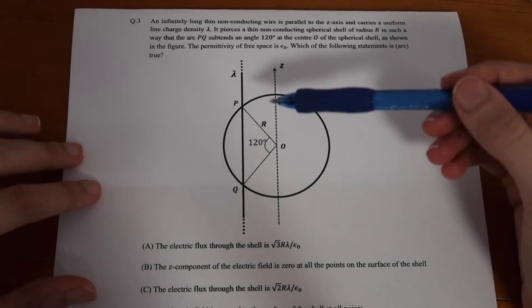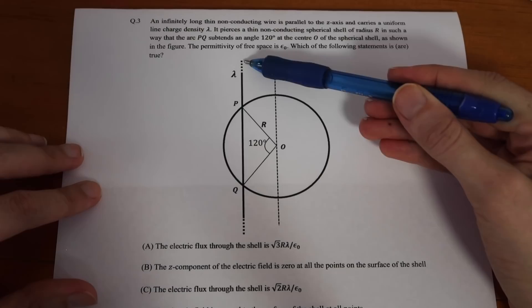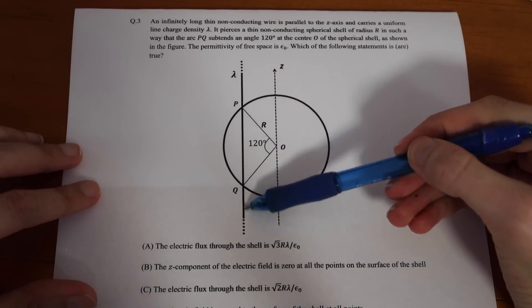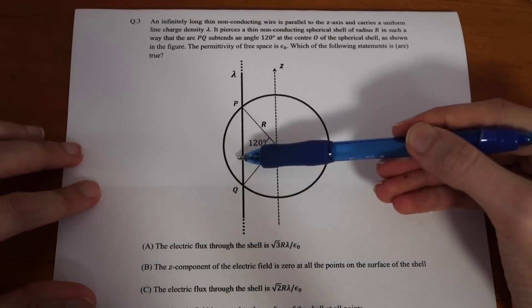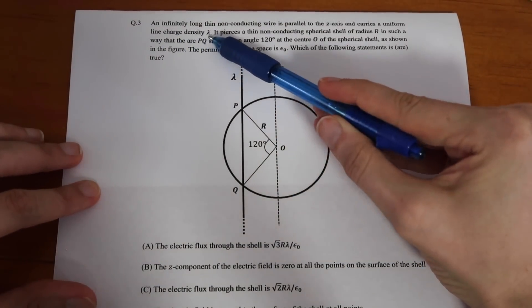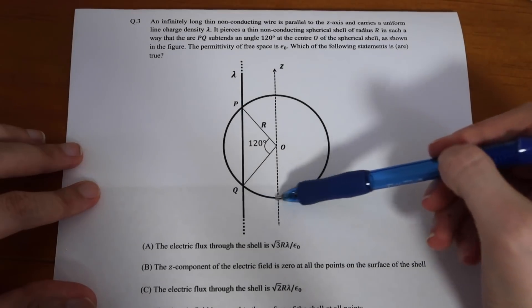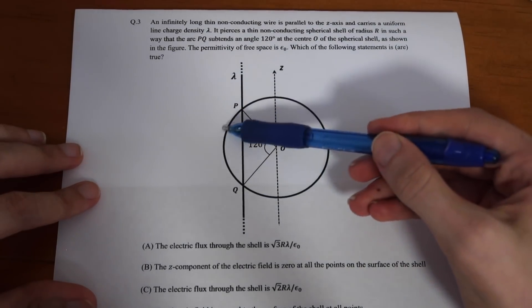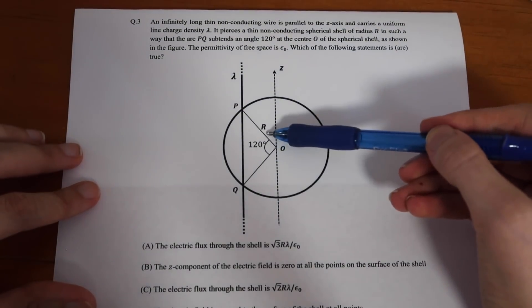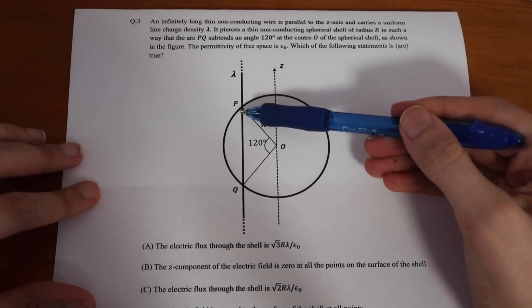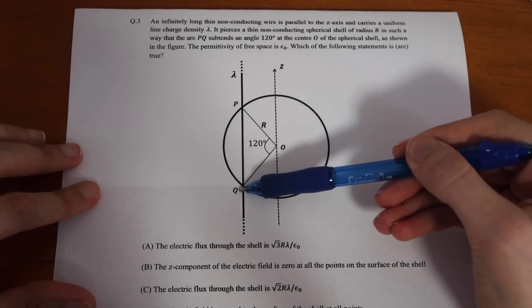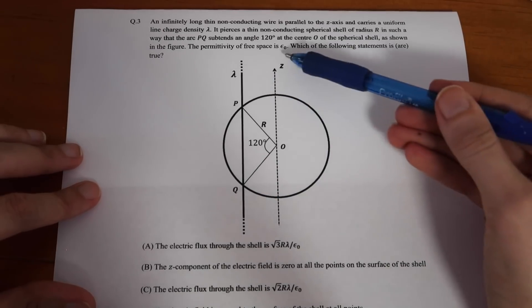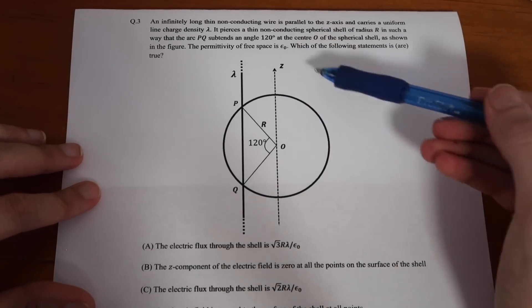Specifically, what we're looking at here is that we have an infinitely long, thin, non-conducting wire, which is parallel to the z-axis and carries a uniform line charge density of lambda. It pierces into a thin, non-conducting spherical shell of radius r in such a way that the arc pq subtends an angle of 120 degrees at the center.